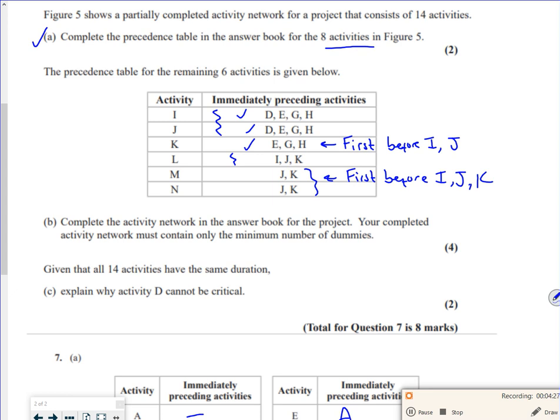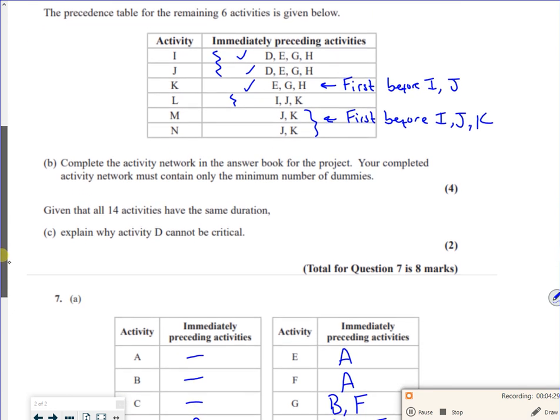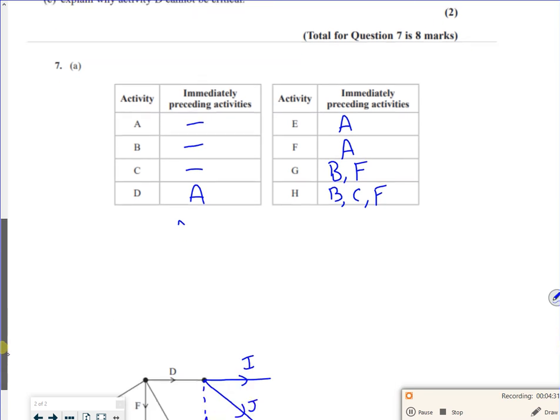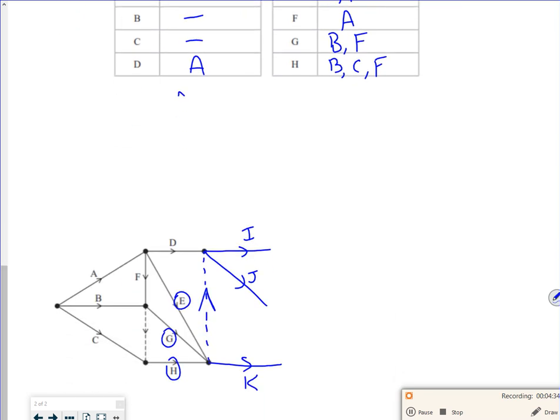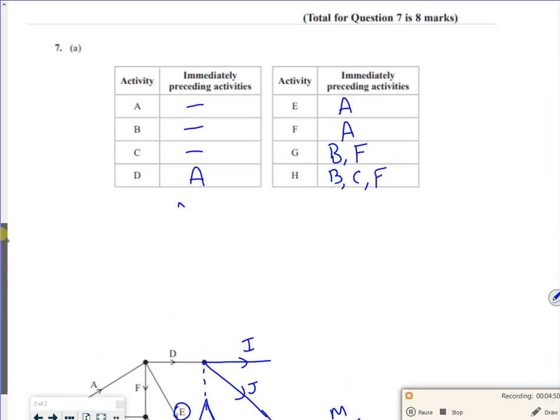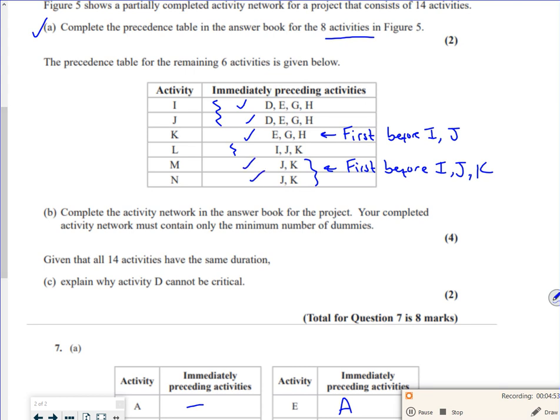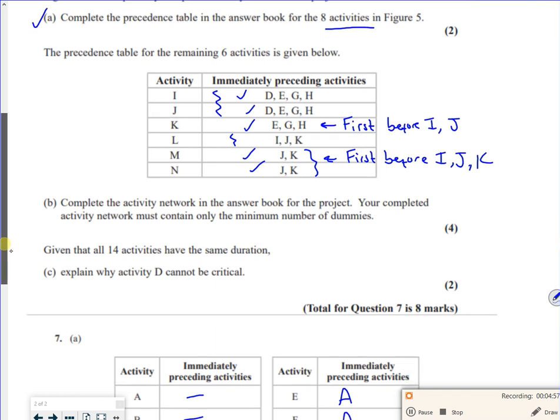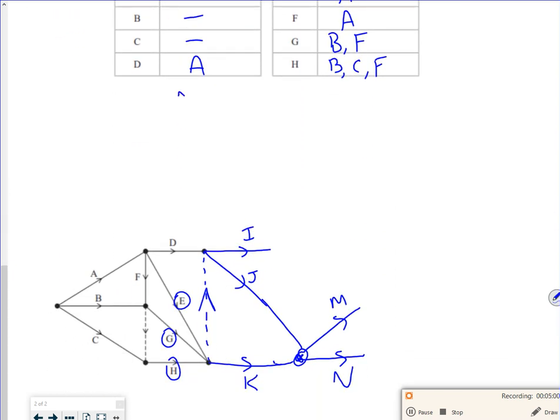So let's have a look at M and N. So M and N are dependent just on J and K. So I can ping them together. And I'll have like an M and N going up here. So M and N are dependent on just J and K. So M and N depending on J and K is done.